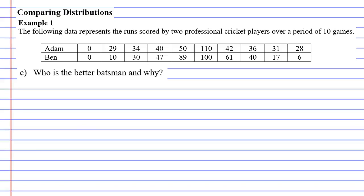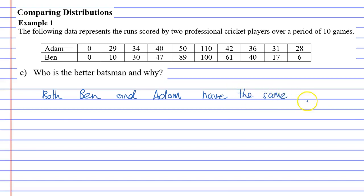We're going to answer part C of example 1 now, and part C just says: who is the better batsman and why? When we look at Ben and Adam, both Ben and Adam have the same mean and median. Which basically means that the measure of centre, or the central measure, really can't be used to decide who is better.